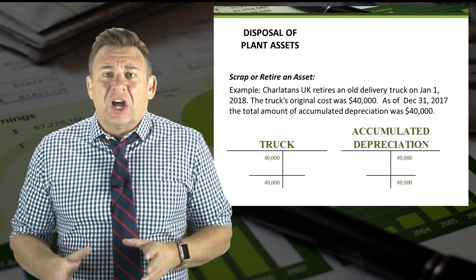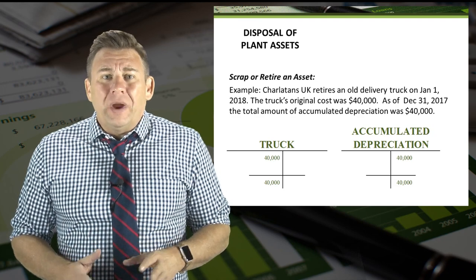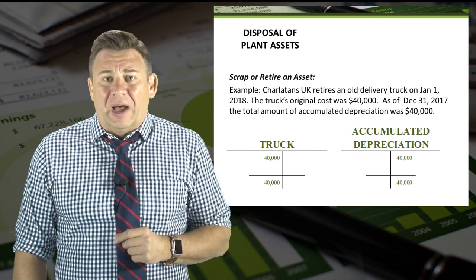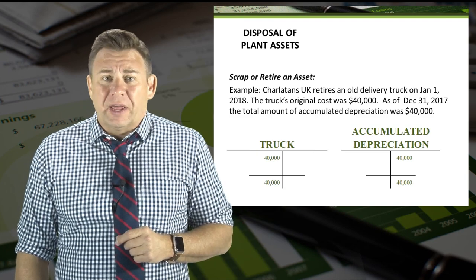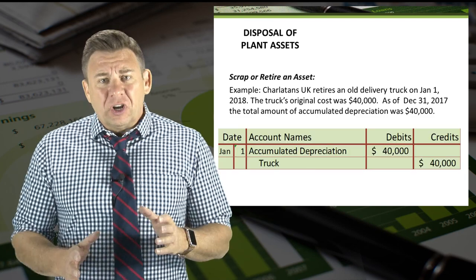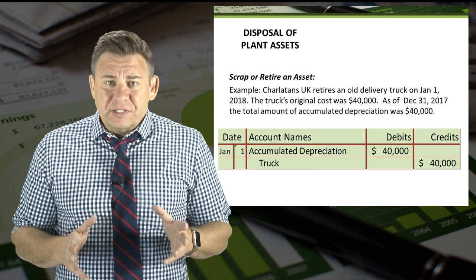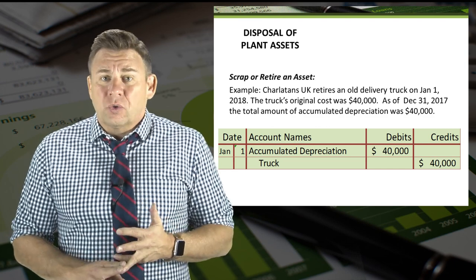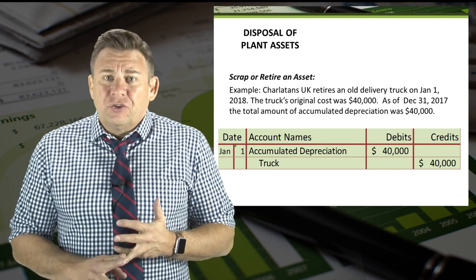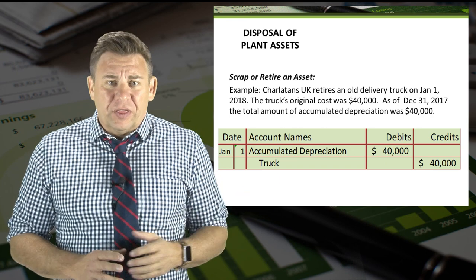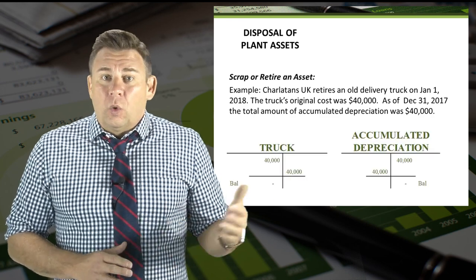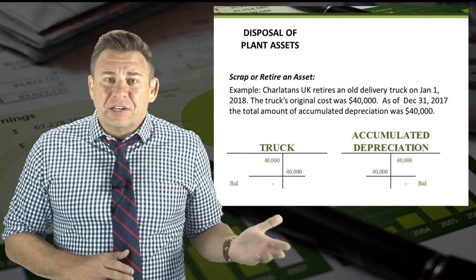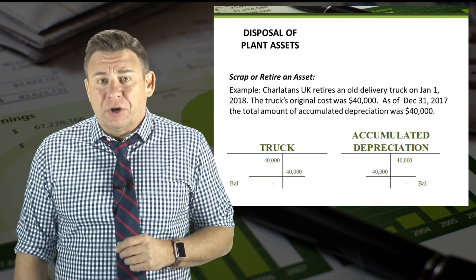Once the truck is physically gone, we need to remove it from our balance sheet, so we need to zero out these two accounts. The journal entry to do this is a debit to accumulated depreciation and a credit to truck in the amount of $40,000. Once we post this journal entry, we can see that the balance of these two accounts are now zero.